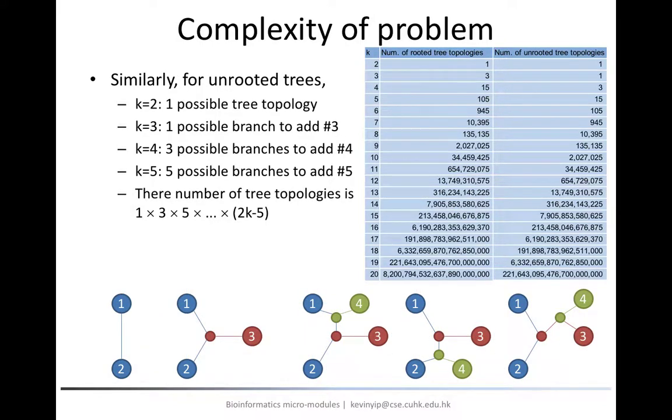For unrooted trees, the way of calculation is almost the same as rooted trees, except that without a root node, with three input sequences, there is only one possible tree topology for an unrooted tree,